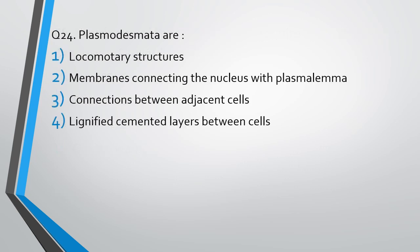Question number 24. Plasmodesmata are: (1) locomotory structures, (2) membrane structures connecting nucleus with plasmalemma, (3) connections between adjacent cells, (4) lignified cemented layers between cells. The correct answer is option 3 — connections between adjacent cells.